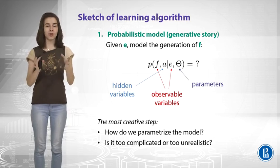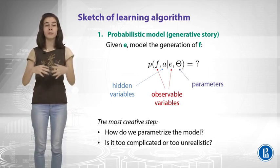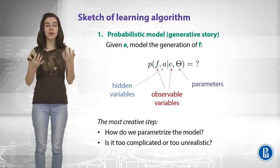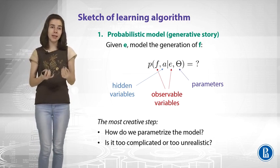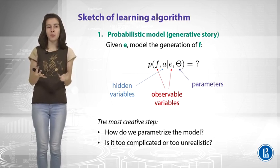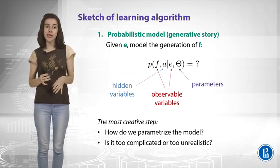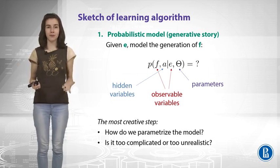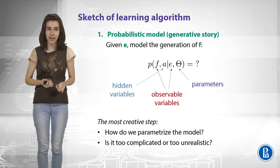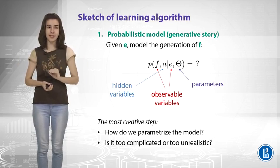And this is actually the most creative step. So we need somehow to decide how do we parametrize our model to have some meaningful generative story. And if we have too many parameters, probably it will be difficult to train that. If we have too few parameters, probably it will be not general enough to describe all the data.